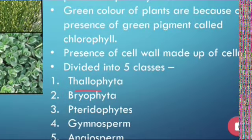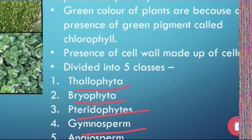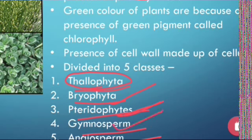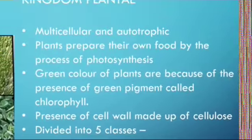They are divided into five classes. First is Thallophyta, second is Bryophyta, third is Pteridophyta, fourth is Gymnosperm, and fifth is Angiosperm. Thallophyta includes organisms like algae which do not have a distinct root and shoot system. Bryophyta means they have a root and shoot system but no leaves, stem, or flowers. Pteridophyta means organisms which have leaves and stem but do not have flowers. Gymnosperm means seeds which are not covered by fruit. And Angiosperm means plants which have fruits as well as seeds within them.